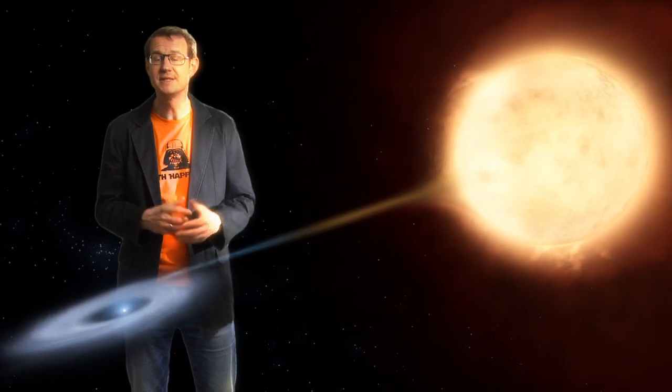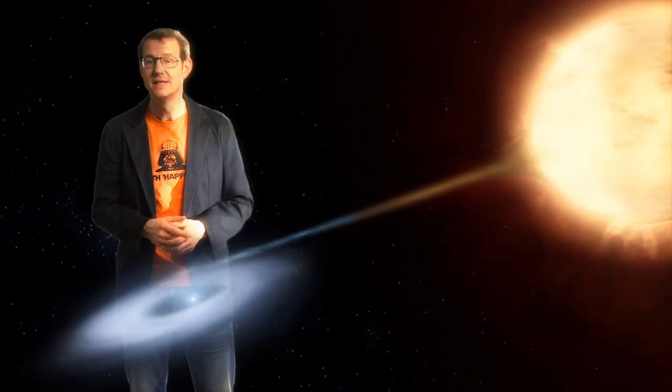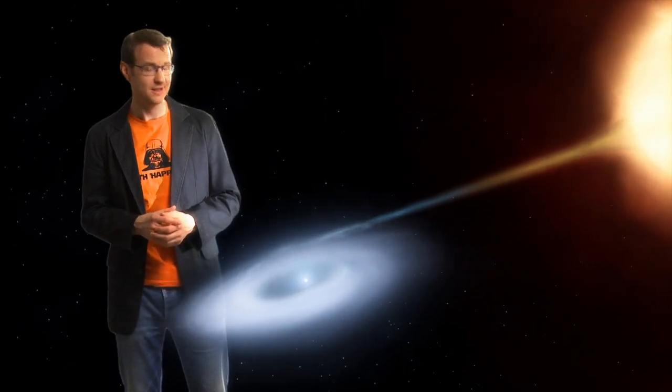The other type of supernovae involves white dwarf stars, which are the remnants of stars like our own Sun. Now normally, a white dwarf is a pretty stable thing. But if one lies close to another star, it can actually pull matter off its neighbour, thereby gradually increasing its mass until finally it reaches the critical mass for a thermonuclear explosion.